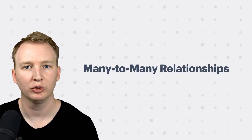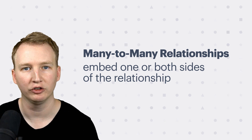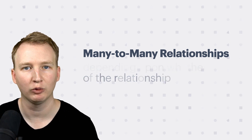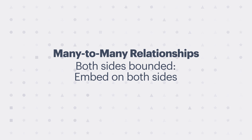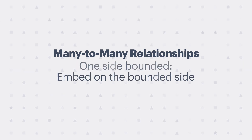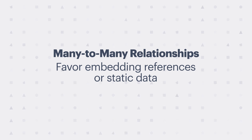To recap, data modeling for many-to-many relationships can be represented by embedding one or both sides of the relationship depending on whether it is bounded or unbounded. If both sides are bounded, then you can embed on both sides. If only one side is bounded, then you should avoid embedding the unbounded side. You should also favor embedding references unless you have information that is primarily static and won't change over time.